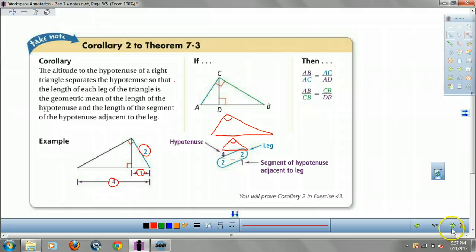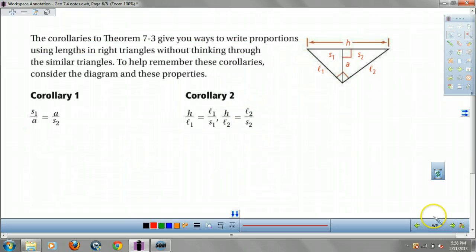Just draw them out and use your similar triangle things that we've been doing. I'm going to show you both ways. This is just another way to look at the corollaries. Pretty much the geometric mean of side 1 and side 2 equals A. Geometric mean of S1 in your hypotenuse equals L1 and S2 in your hypotenuse equals L2.